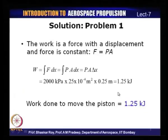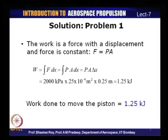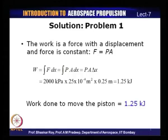Calculating 2000 kPa × 25 × 10⁻⁴ m² × 0.25 m gives 1.25 kilo joules. So the work done to move the piston was 1.25 kilo joules. This is a simple problem where you calculate work done as pressure times area times Δx, given the pressure, area of the piston, and the distance by which the piston moves.